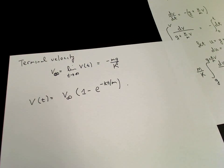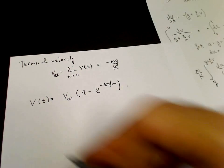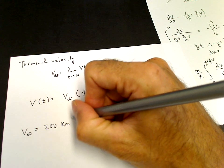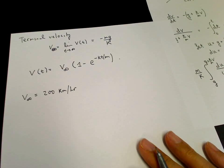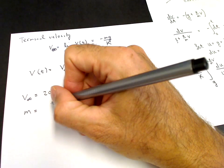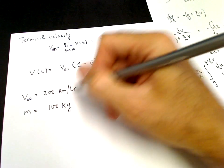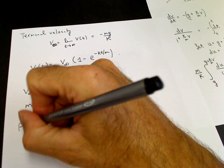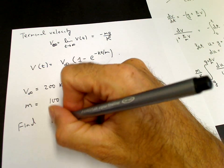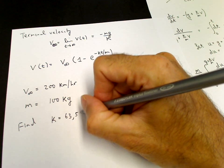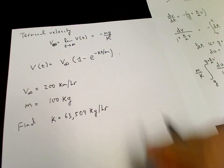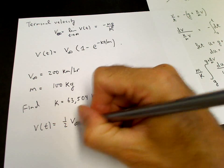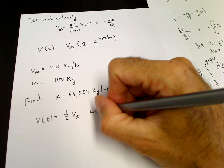It's interesting to put in some numbers here. For instance, if we know that the terminal velocity of a skydiver is something like 200 kilometers per hour, and that the mass of the skydiver is, say, 100 kilograms, so that's the person plus all of his equipment, then we can compute k, and we find that k turns out to be 63,504 kilograms per hour. And we get v of t equals 1 half the terminal velocity.